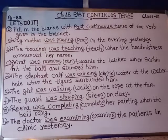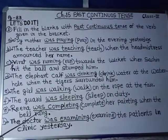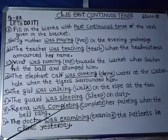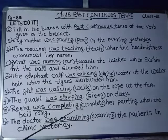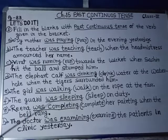G: Rena was completing her painting when the bell rang. With the verb 'complete' we added ing and used 'was' because Rena is singular. So the answer is: was completing.